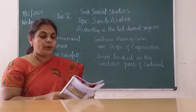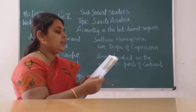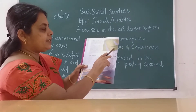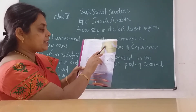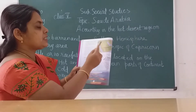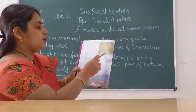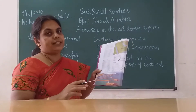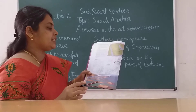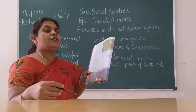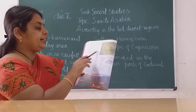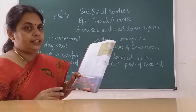Now let's see where Saudi Arabia is located. Saudi Arabia lies to the southwest of the Arabian Peninsula and almost the whole country occupies the Arabian Desert. It is a Middle East country and the fifth largest country in Asia.